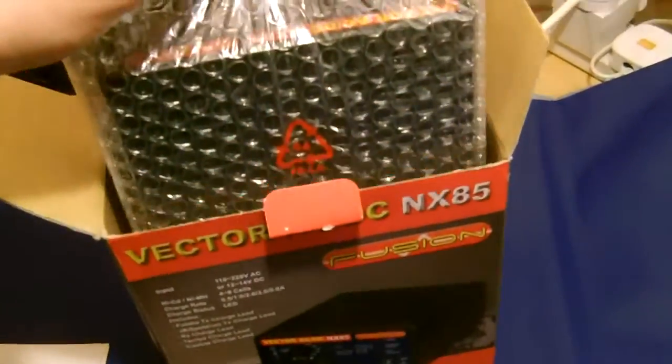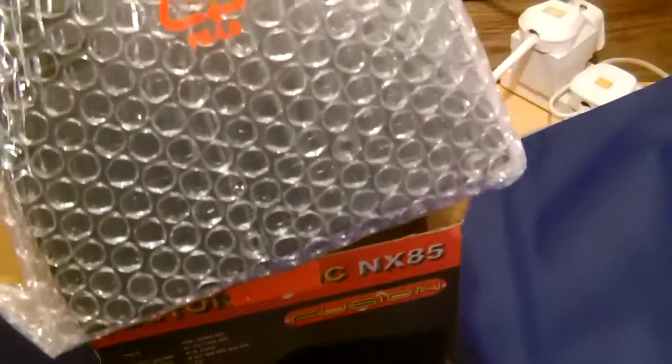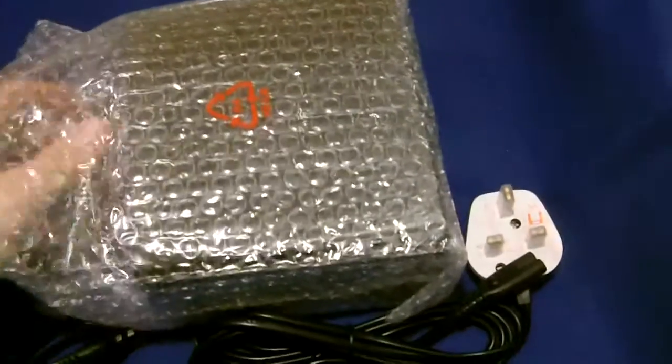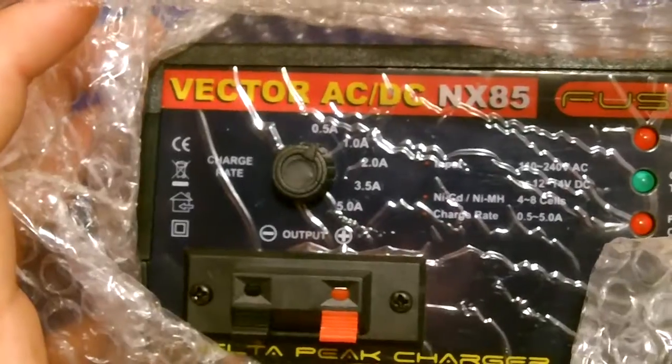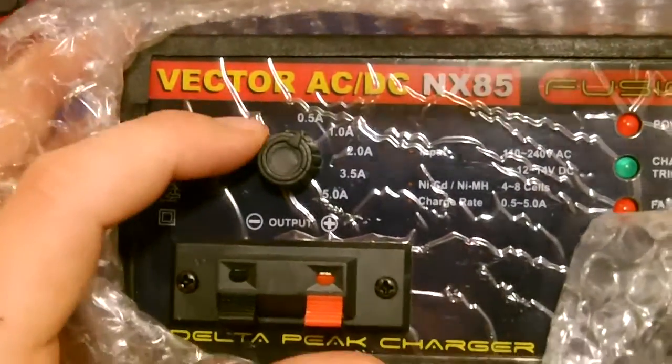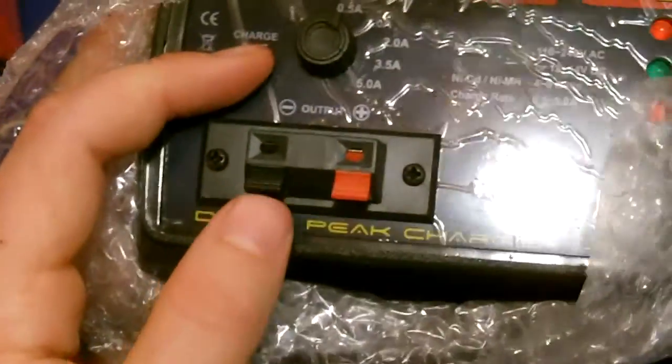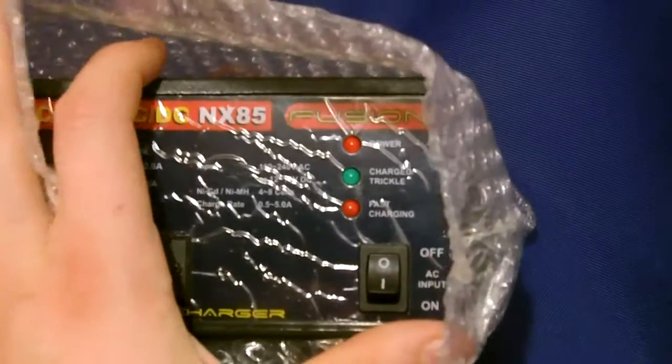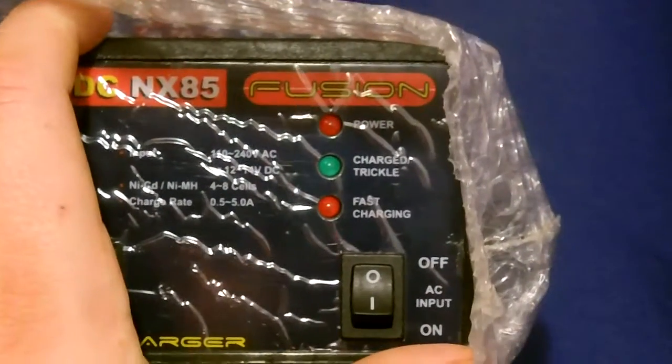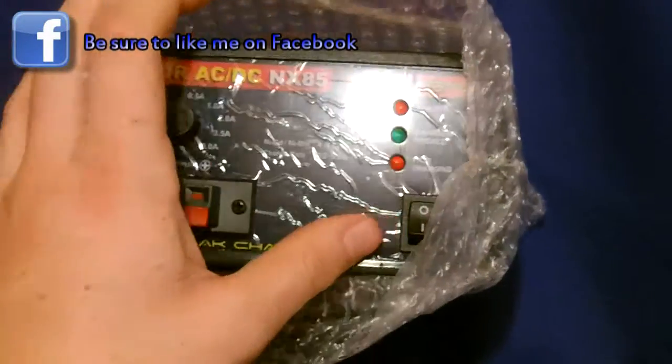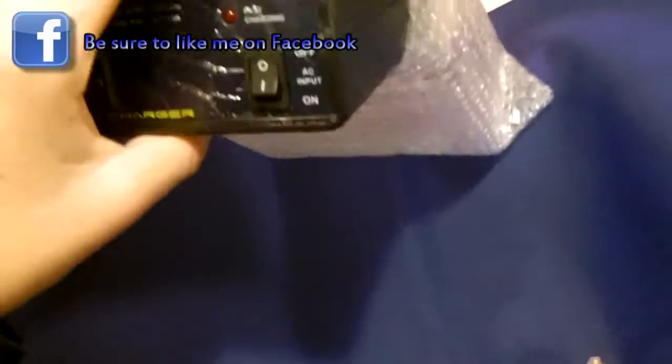Okay, so out comes the charger. It's pretty light. Charger is secured nicely and protected nicely. This is our charge rate here and here are the wire connectors. Then on this side we've got power to the charger, charger trickle and fast charging, and here we've got the on-off switch. Let's take it out of here.